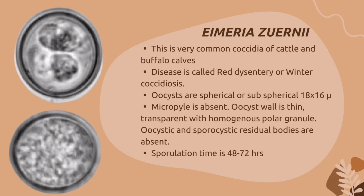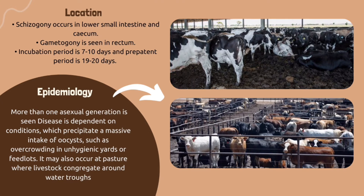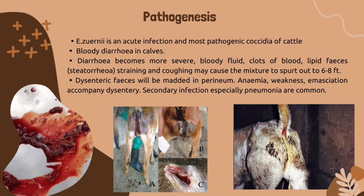Oocysts of Eimeria zuernii are spherical or subspherical, 18 by 16 microns, and the micropyle is absent. The oocyst wall is thin and transparent with a homogeneous polar granule. Oocystic and sporocystic residual bodies are absent. Sporulation time is 48 to 72 hours. Schizogony occurs in the lower small intestine and cecum; gametogony is seen in the rectum. Incubation period is 7 to 10 days and prepatent period is 19 to 20 days. Disease is dependent on conditions that precipitate massive intake of oocysts, such as overcrowding in unhygienic yards or feedlots.